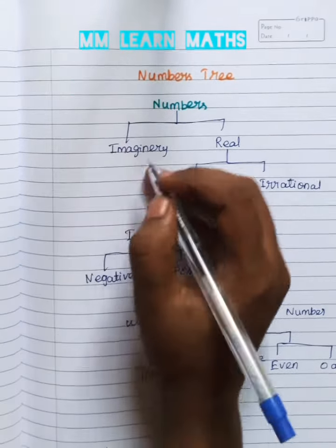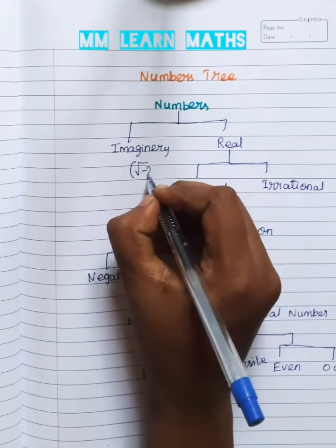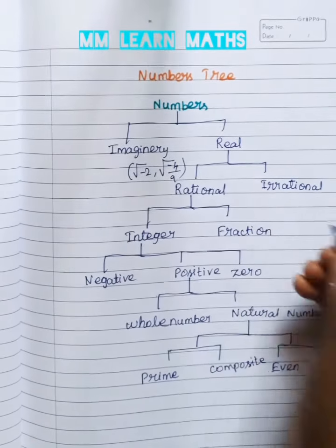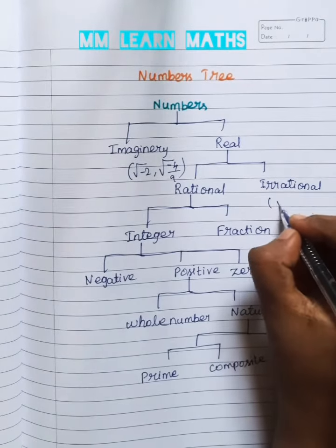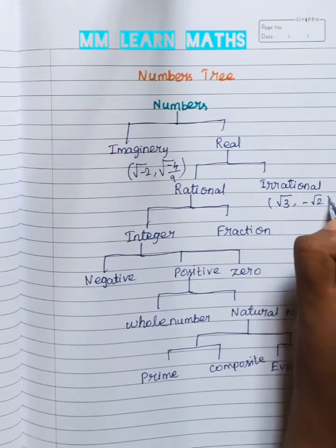Some example. Imaginary number is root minus two, root minus four by nine. This is imaginary number. Irrational number is root three minus root two.